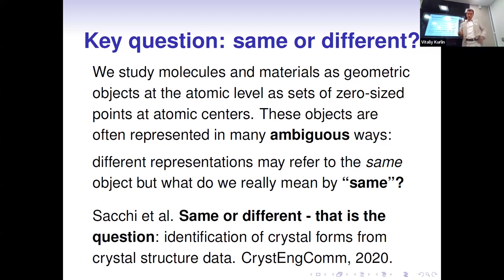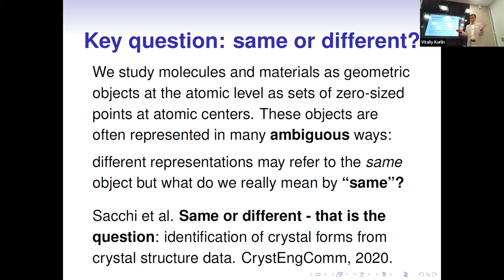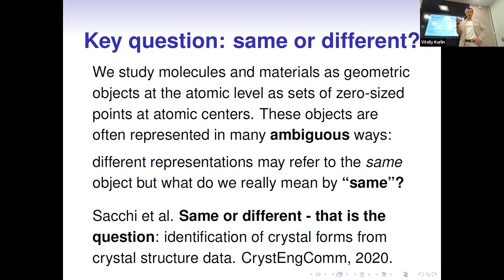The key question we are asking for molecules — and later in Donn's talk for solid crystalline materials — is: same or different? This question is mathematically rather non-trivial because many real data objects are represented in digital form, for example as a list of coordinates or in a crystallographic information file, in rather ambiguous ways. That's why we need to clarify exactly what we mean by 'same or different.'